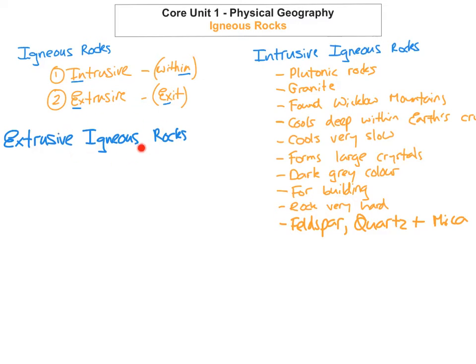The next one we're going to look at is the extrusive igneous rock. It's extrusive — meaning exit — so it's when the molten magma reaches the surface. When it comes out it's called lava, and as the lava is exposed to air and water it quickly cools and solidifies. Because it cools really quickly, the crystals don't have time to form, so they're very small. These are also known as volcanic rocks. An example of an extrusive igneous rock, or volcanic rock, is basalt.